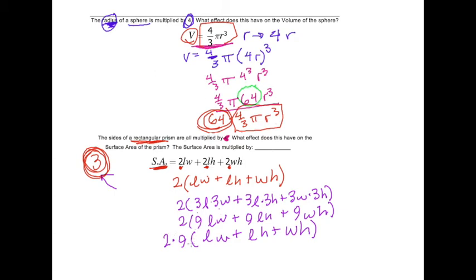So now look. On the outside, I have 9 times 2, which is 18. LW plus LH plus WH. Now, if I look at the original equation compared to what I have now, what's the difference? I have 18 on the outside, 2 on the outside on the original.